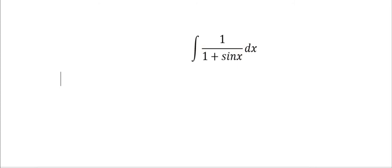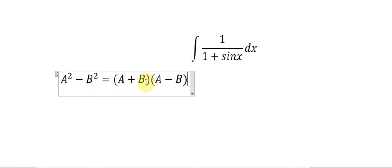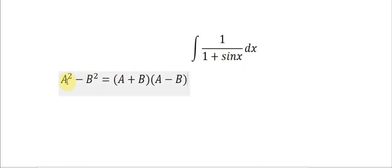We will apply the formula a² minus b² equals (a + b) multiplied by (a minus b). So in here we have 1 plus sin(s), and in this situation we will multiply by 1 minus sin(s) to become 1 minus sin²(s).